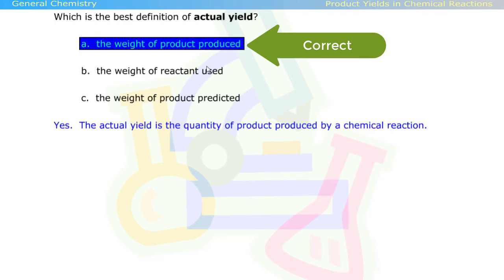The answer is A, the weight of product produced. The actual yield is the quantity of product produced by a chemical reaction.